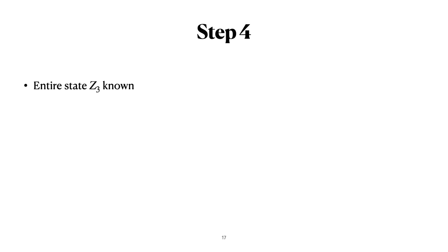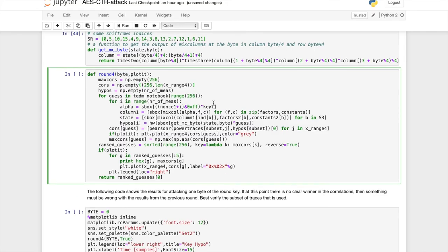After round three, we have recovered the entire state, which means that we can compute state x4 at the start of round four. At that point, we can perform a regular DPA attack where we only have to hypothesize on the round key bytes. After recovering that round key, we can simply invert the key schedule to compute the master key.